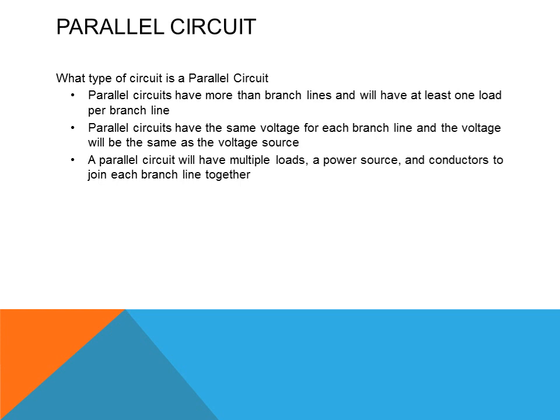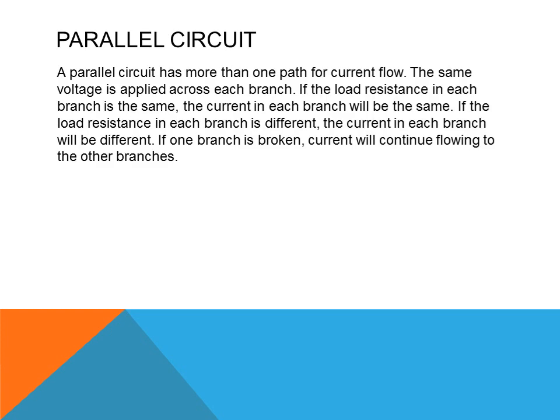What type of circuit is a parallel circuit? Parallel circuits have more than one branch line and will have at least one load per branch line. Parallel circuits have the same voltage for each branch line, and the voltage will be the same as the total voltage, or the source voltage. A parallel circuit will have multiple loads, a power source, and conductors to join each branch line together. A parallel circuit has more than one path for current to flow, which is different from a series circuit which only has one path — that's what makes it parallel.